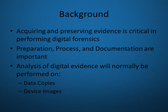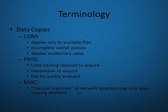In general, analysis of digital evidence will normally be performed either on data copies or device images. It is important to use the correct terminology regarding digital evidence. One type of digital evidence may be data copies. Data copies are copies of specific pieces of data — this could be a file or a folder full of files. There are many negatives about using copies as evidence in that they apply only to available files to the operating system, and data copies can give an incomplete overall picture. Due to these, they have a weaker overall evidentiary value.